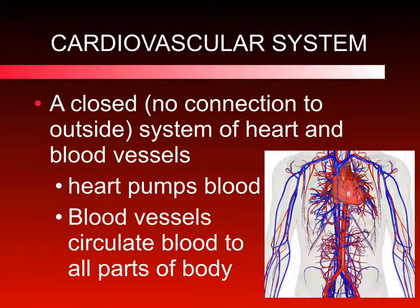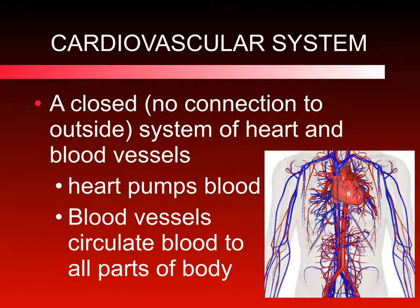The cardiovascular system is a closed system, which means that the blood travels in designated areas, specifically the blood vessels, and does not exit the blood vessels. The heart is the pump that supplies the force that moves the blood in the arteries, and the blood vessels carry the blood throughout the body, delivering materials such as oxygen and other materials, and taking away waste products like carbon dioxide.